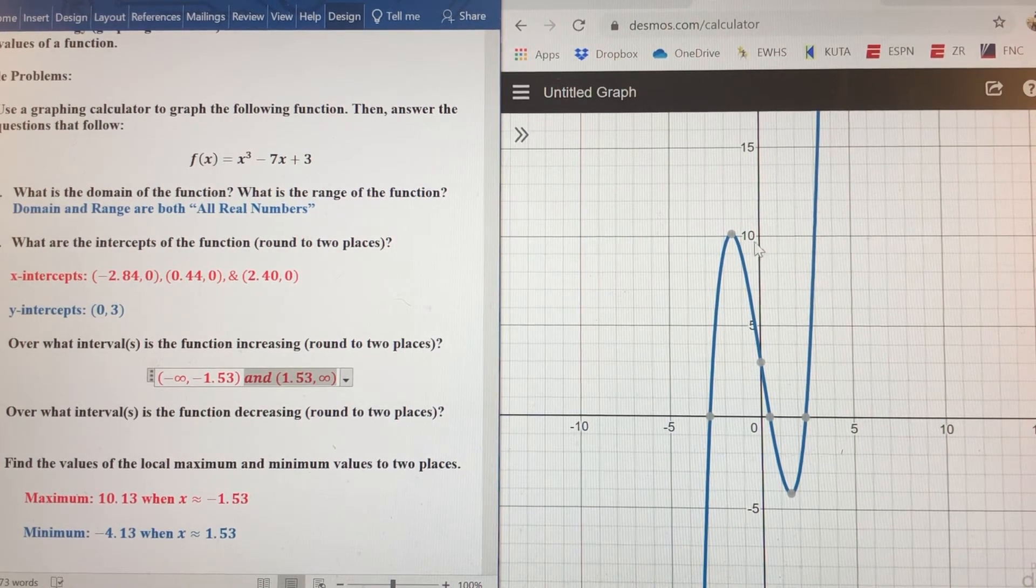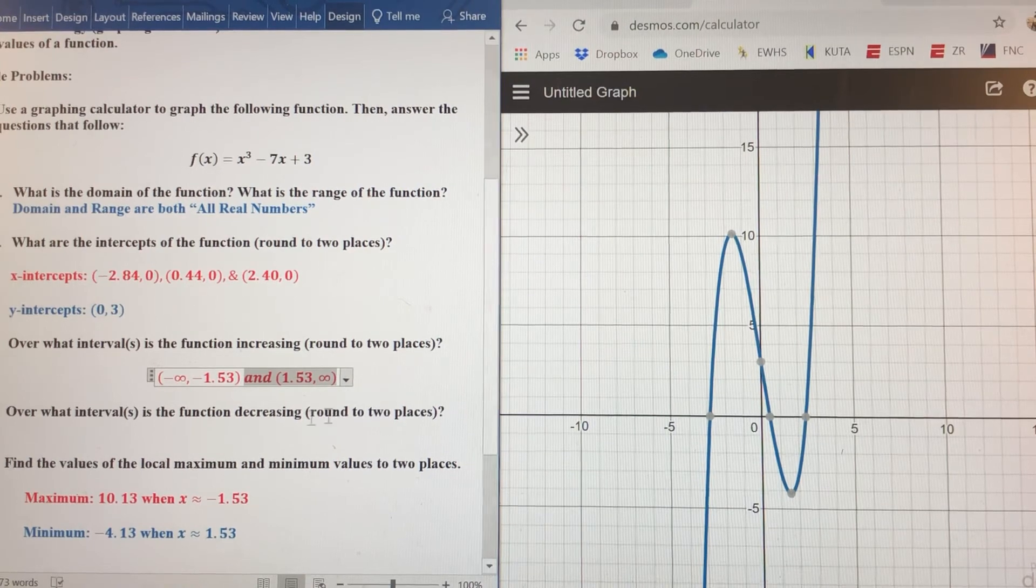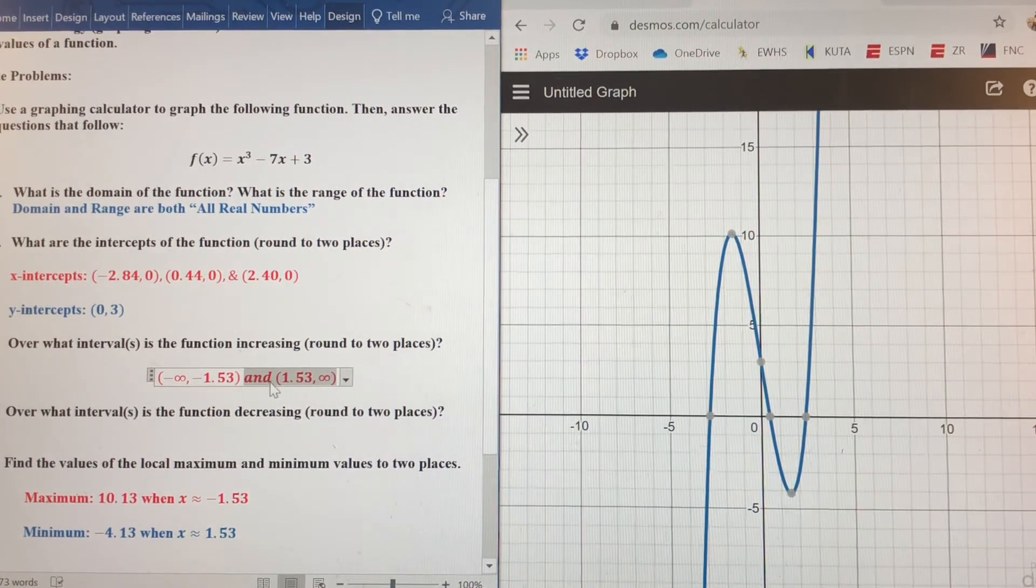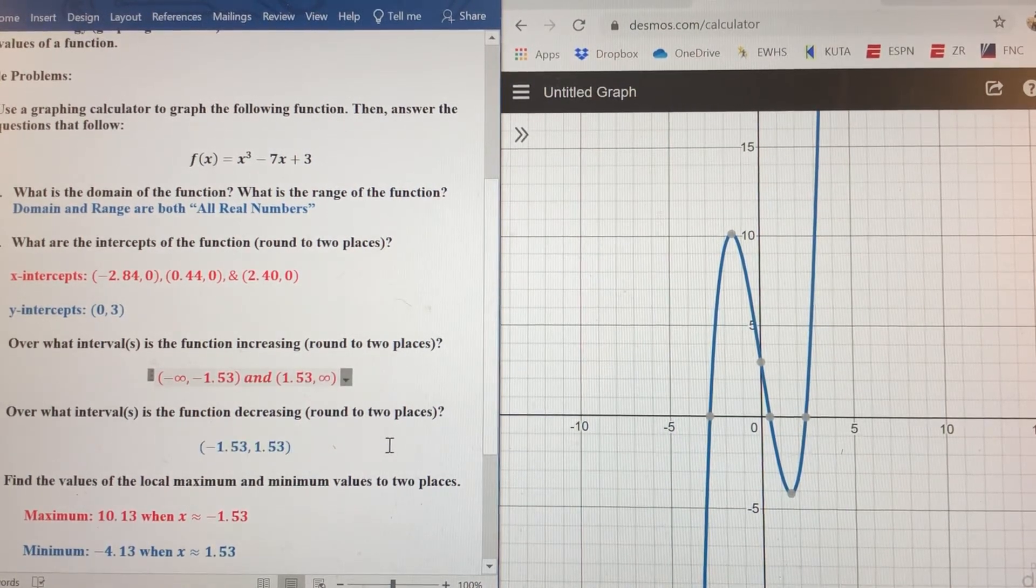So the only decreasing interval I have here is between these two x values. So from negative 1.53 to 1.53.